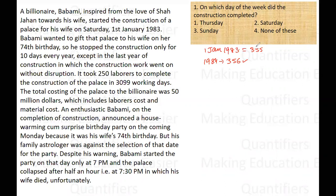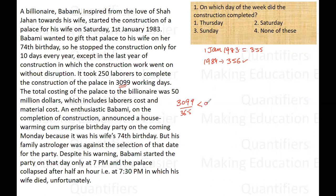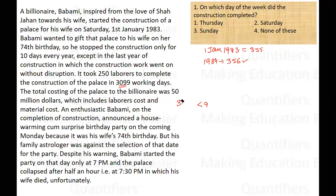Let us do a little bit of hit and trial here. Total working days are 3099. If I divide 3099 by even 365, this value has to be less than 9. That means 10 years were not taken to complete the whole work — it was less than 9 years.